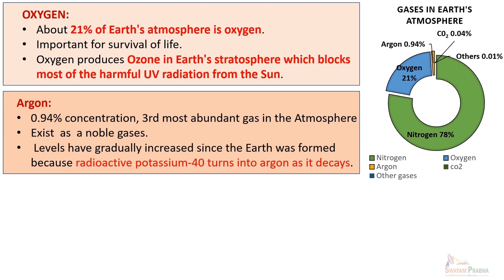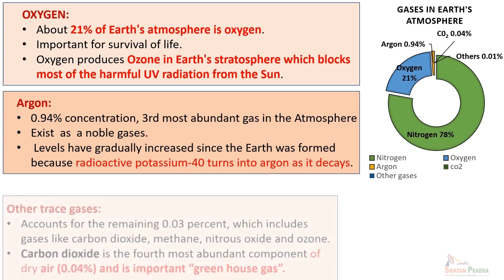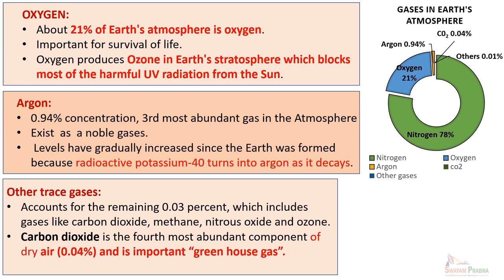Another important gas is argon. Although it is an inert noble gas, it constitutes about 1% of the atmosphere, making it the third most abundant gas. It is non-reactive, and its levels have gradually increased since earth was formed because radioactive potassium-40 decayed into argon over several billion years. Other trace gases account for the remaining approximately 0.3%, which include gases like carbon dioxide, methane, nitrous oxide, and ozone.